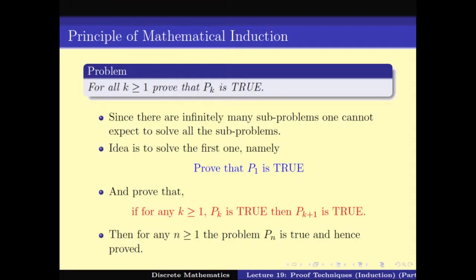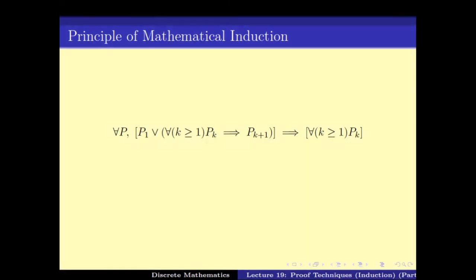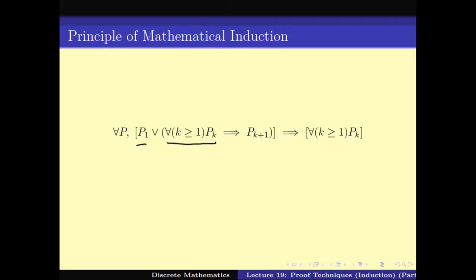Unfortunately this proof technique doesn't follow from the usual rules of propositional logic. We need a particular axiom for it, which says that this proof technique is actually correct. We call this the principle of mathematical induction, and it states: if you can prove P1 is true, and for all k, Pk is true implies Pk+1 is true, then you end up proving that Pk is true for all k greater than or equal to 1. This is a very useful proof technique and we have already seen quite a number of applications of it.